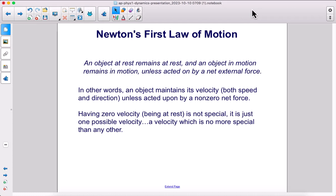In other words, an object maintains its velocity, both speed and direction, unless acted upon by a non-zero net force. Having zero velocity, being at rest, is not special. It's just one possible velocity, a velocity which is no more special than any other.